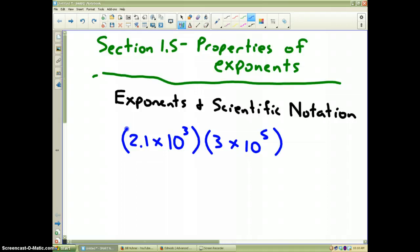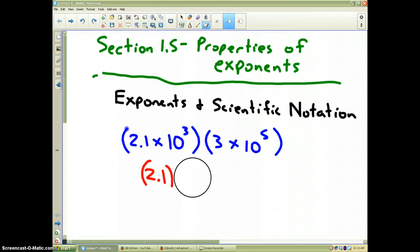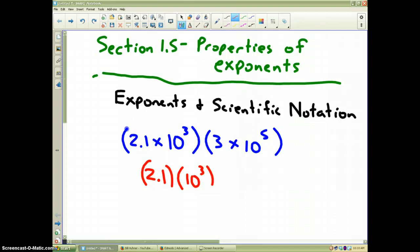I have an example here in blue: 2.1 times 10 to the third times 3 times 10 to the fifth. Basically, what you have is four things being multiplied together: 2.1, 10 to the third, 3, and 10 to the fifth.